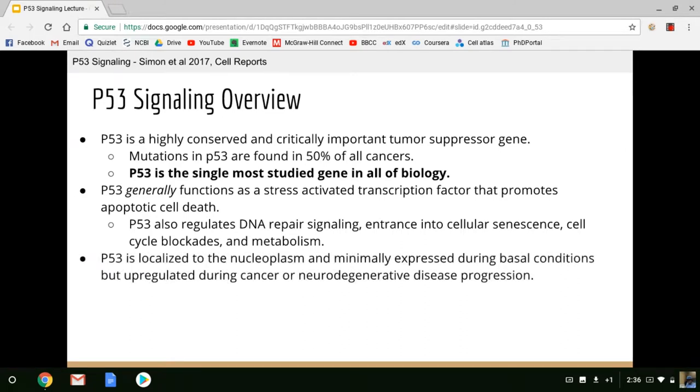In terms of where p53 is found, p53 is localized to the nucleoplasm, but it's also found in the cytoplasm. It's minimally expressed during basal conditions, but it's upregulated during cancer or neurodegenerative disease progression. So during normal business-as-usual activity, p53 is continuously degraded and during apoptotic cell death, p53 spikes.